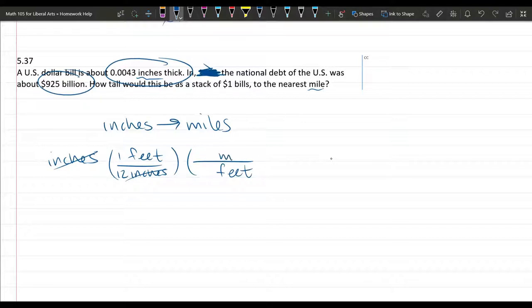We need feet on the bottom. Mile on the top. 5280. Alright, so this is how we're going to go from inches to miles.